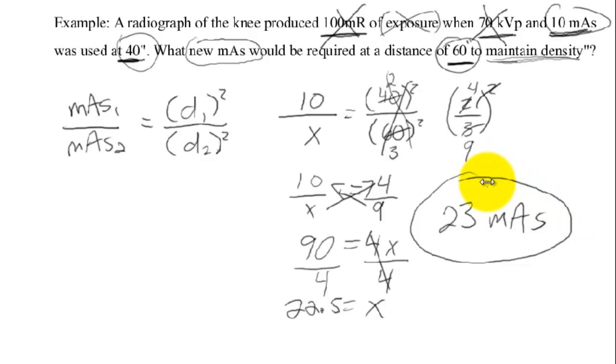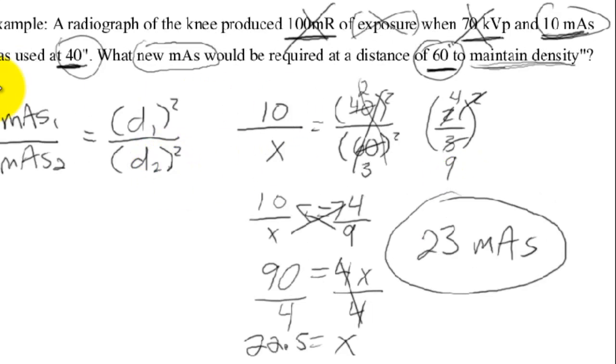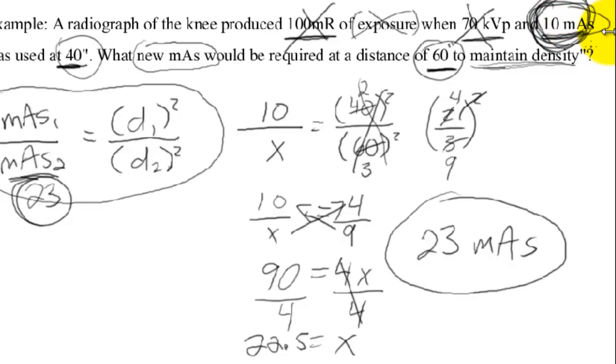Just in theory here though, let's think about this, the density maintenance formula. If you're going to increase your distance from 40 inches to 60 inches, your intensity decreases. So the amount of technical factor usage or the amount of density required to maintain that exposure is going to have to increase. So your mAs2 value right here, which we got was 23, should be higher than the original mAs1, which is 10 up here. And it is.